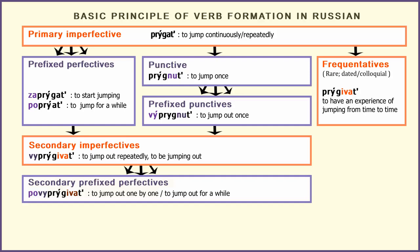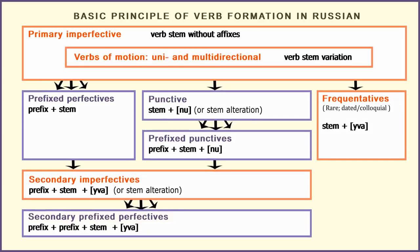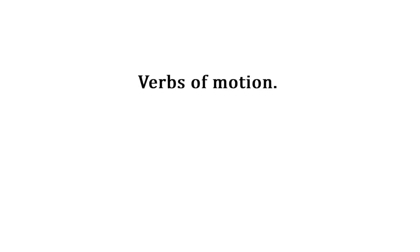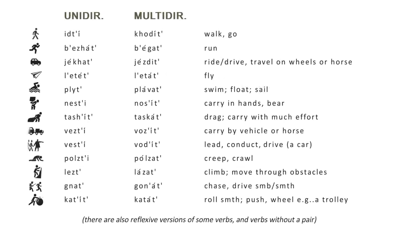Thus the main purpose of prefixes and punctive forms is to provide certain concepts for resultative events. However, there is also one small but important category in Russian grammar that has to do with the variation in the internal structure of processes. Verbs of motion are a group of imperfective verbs that denote processes such as walking, running, flying, including a few transitive ones like carrying or leading. Each of them has two versions, marked with some variations in the verb stems.